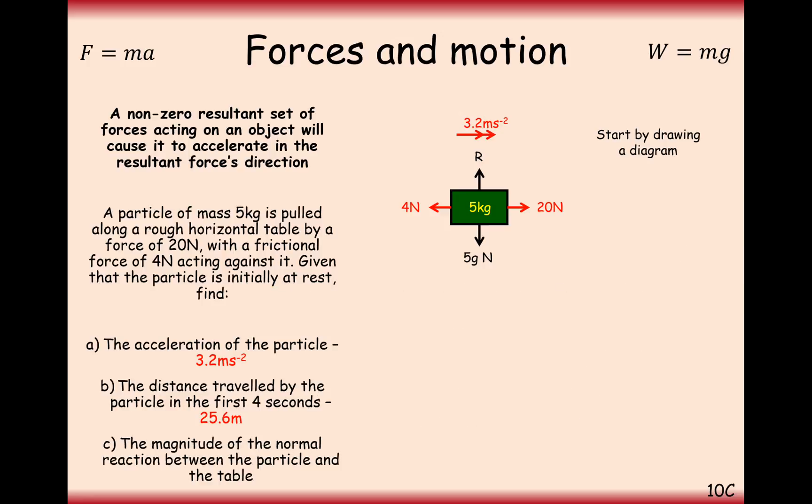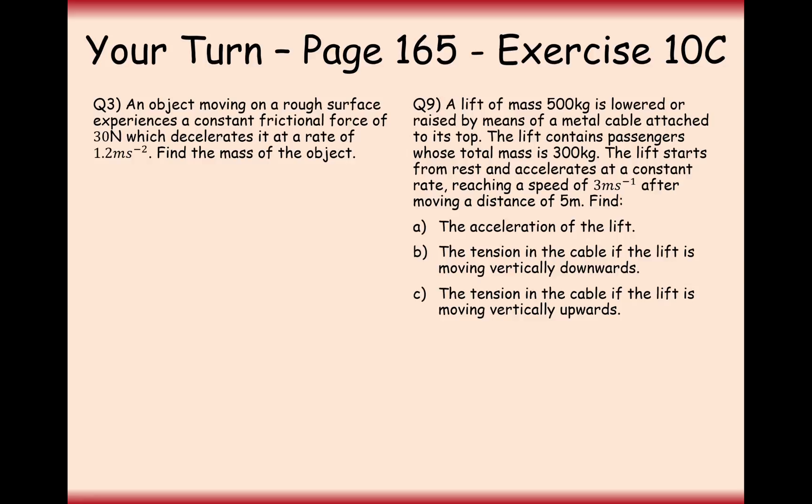Find the magnitude of the normal reaction on the particle on the table. R here is the normal reaction. That's the force that we want to find for part C. In this case, it's just going to balance out with the 5g force down the bottom because there's no vertical acceleration. So R equals 5g. That's all the examples we're going to go through here. Pause the video and have a go at these two, and we'll go through it afterwards.